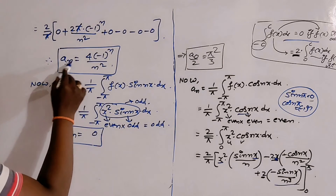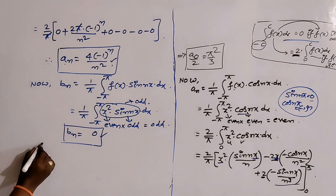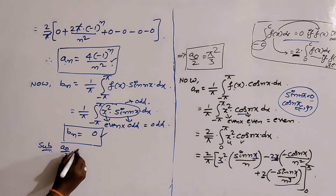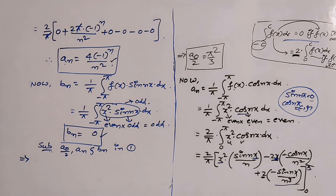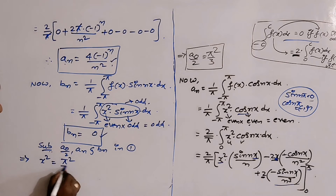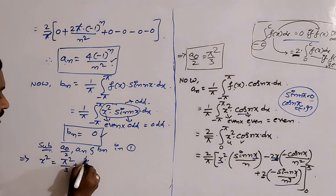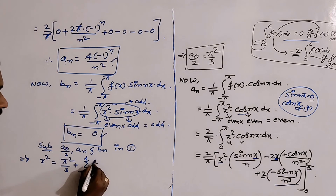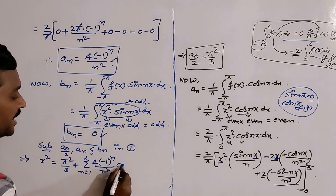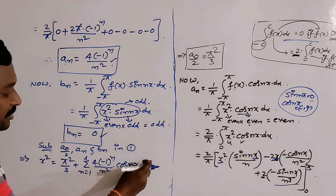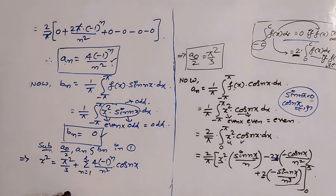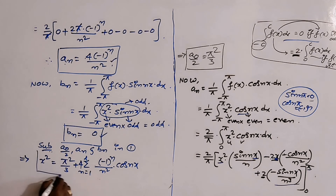So a₀/2 = π²/3, aₙ = 4(−1)ⁿ/n², and bₙ = 0. Substituting these values into equation (1), f(x) = x² = π²/3 + Σ(n=1 to ∞) 4(−1)ⁿ/n² · cos(nx). Since bₙ = 0, the sine term disappears. Taking 4 outside the sigma, this is the required Fourier series and matches the given result.